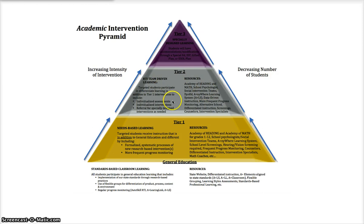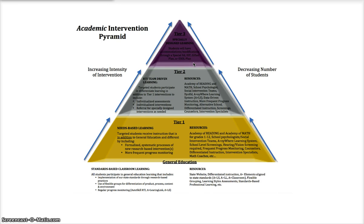If the student with these lighter interventions still isn't making the achievement gains, we can put them into Tier 3 — specially designed learning. Students will have accommodations, modifications, through a special education IEP or gifted plan, where they're placed on a plan with very specific interventions. In Tier 1 and 2, we can really apply a lot of universal design to create inclusion for those learners. In Tier 3, we're talking about heavier accommodations, modifications, and an IEP process. It's really a progression of response to intervention.